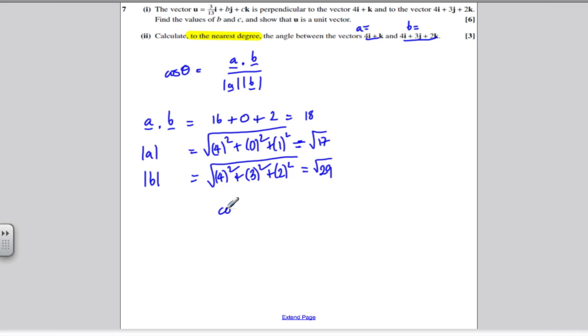So plugging everything into this formula, cos of the angle between these vectors must therefore be A dot B, which is 18, divided by root 17 times root 29.